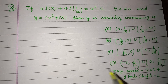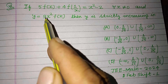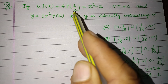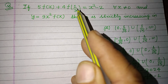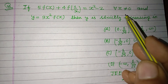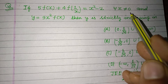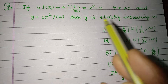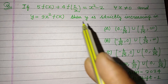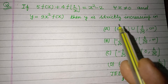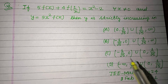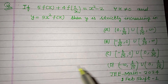First, read the problem carefully. If 5f(x) + 4f(1/x) = x² - 2 for all x > 0, and y = 9x²f(x), then find the interval in which y is a strictly increasing function.